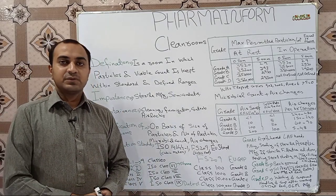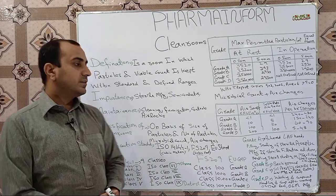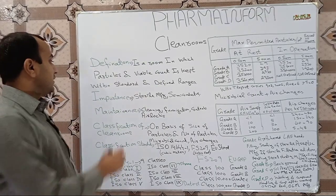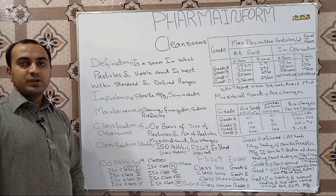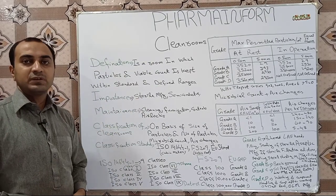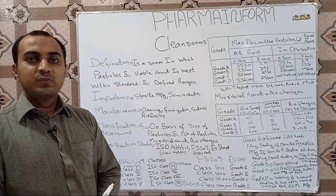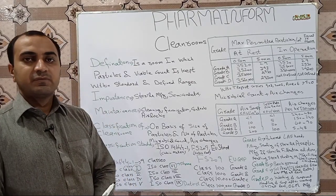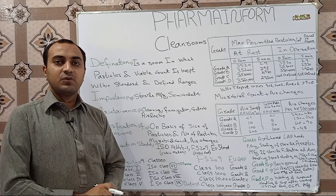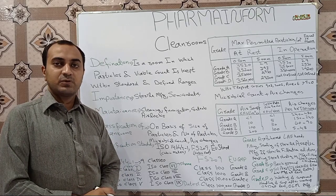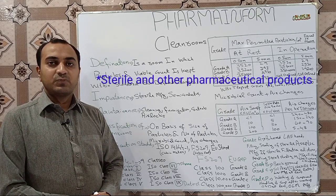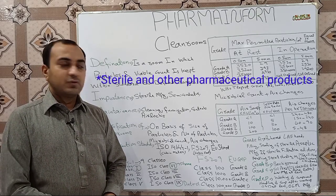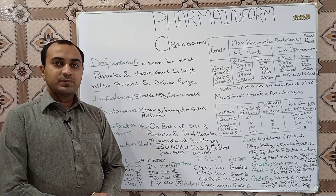Viable count means living organisms like microorganisms, and non-viable particle count means particles which may be generated by dust or any other non-living particles. Clean rooms are very important for the manufacturing of sterile products and also very important for the manufacturing of semiconductors.